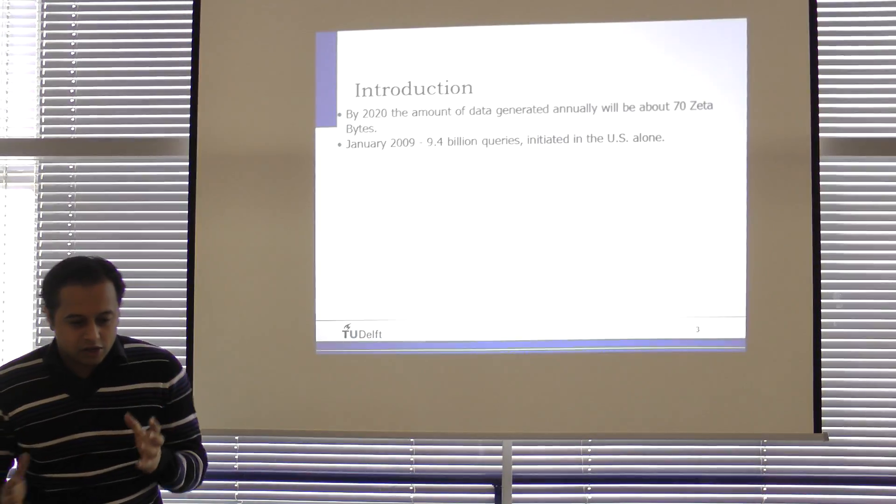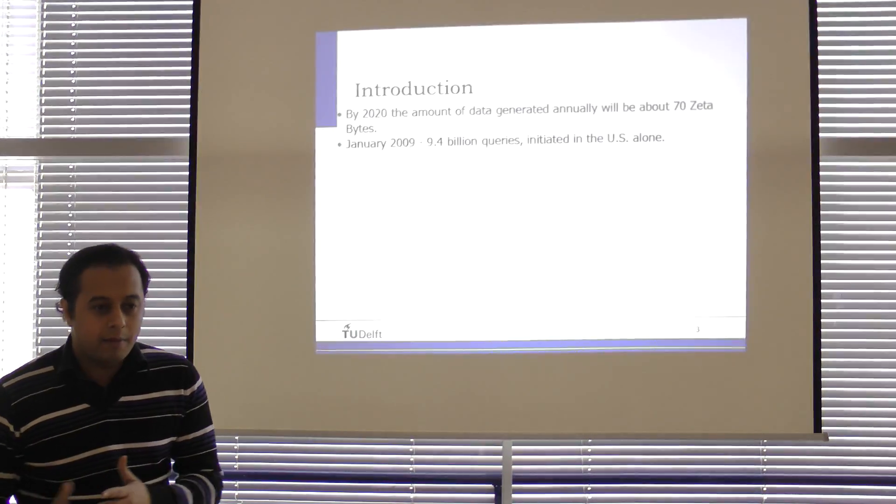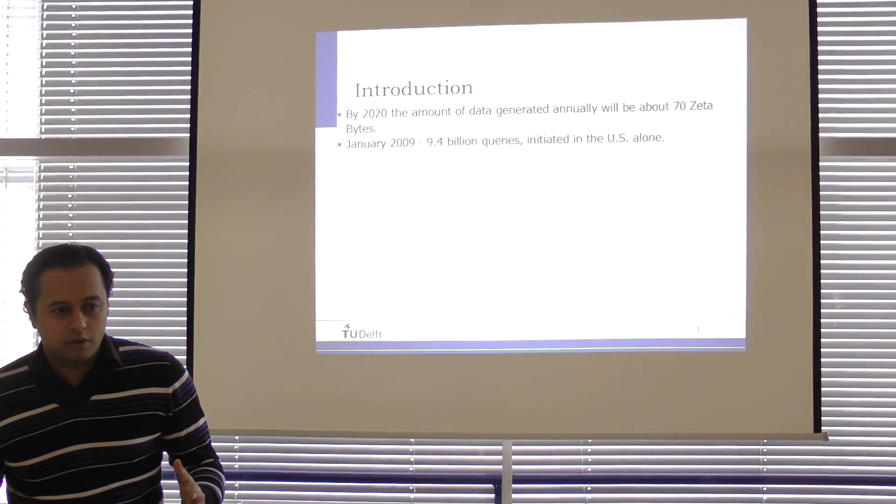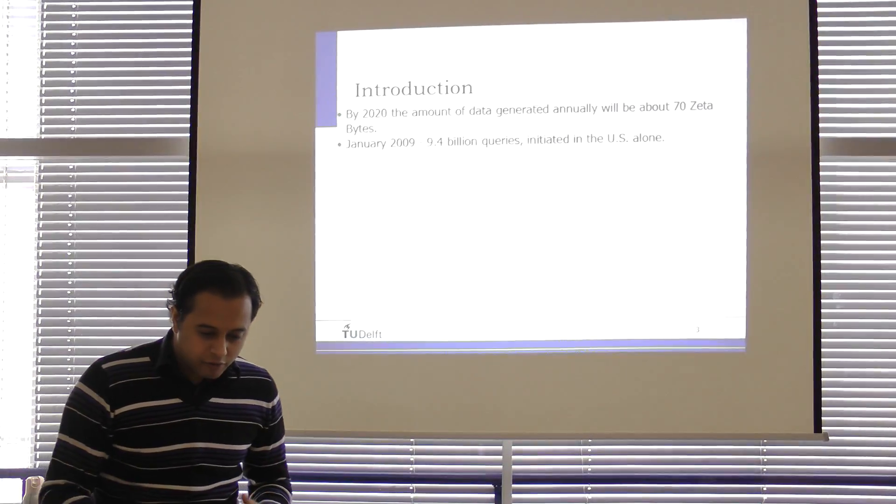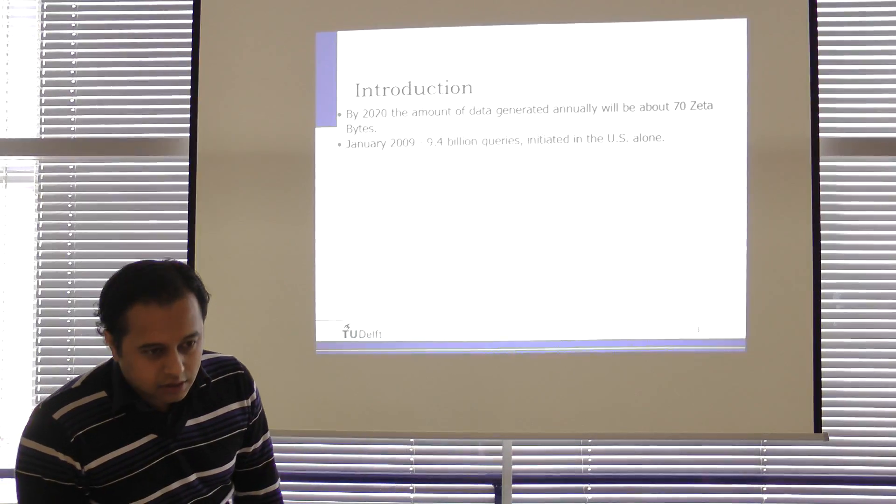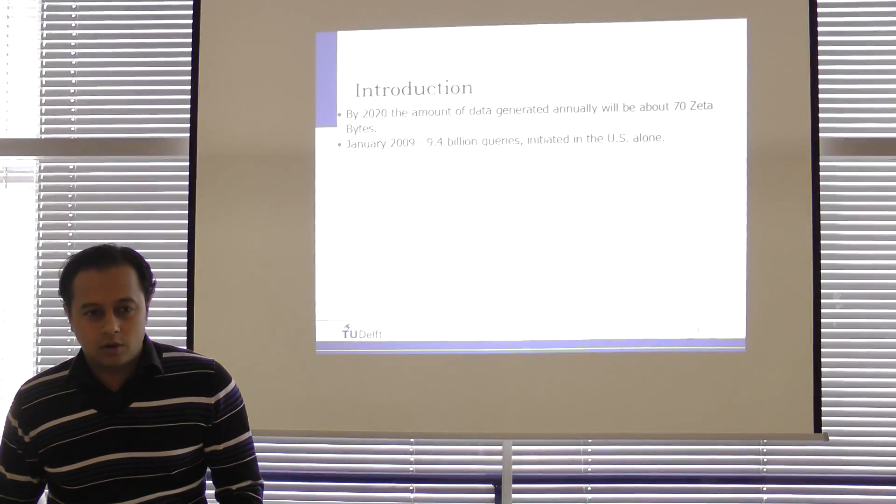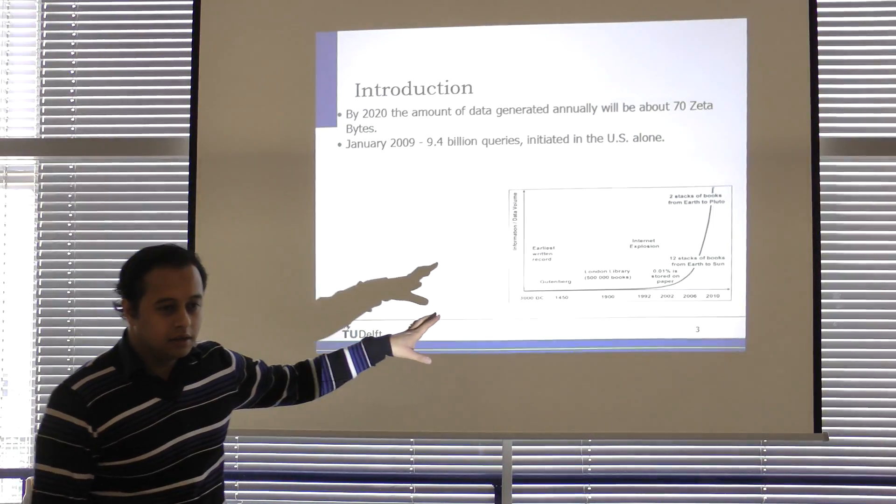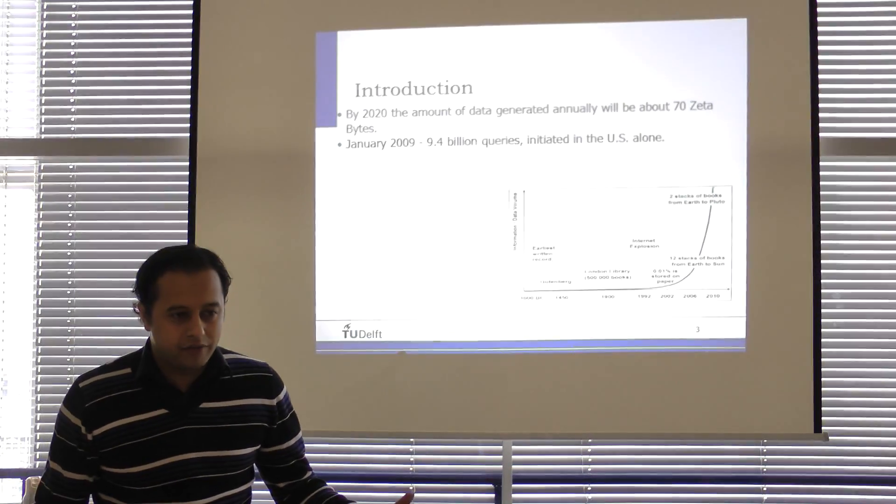Fundamentally, what is happening right now? There will be around 70 zettabytes of data available online by 2020. That's huge. And in 2009, for example, there were 9.4 billion queries only in the U.S. What does that mean? It means that we are going to have a lot of data online very soon. We already have a lot of data.